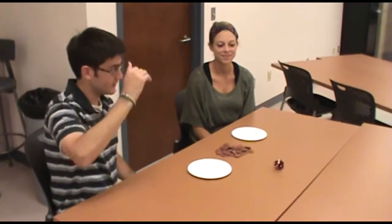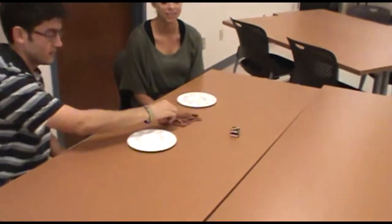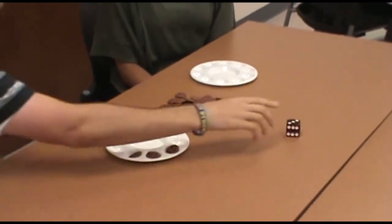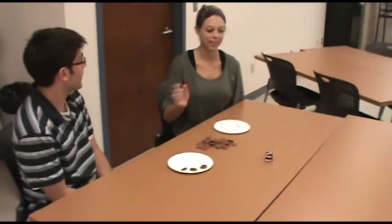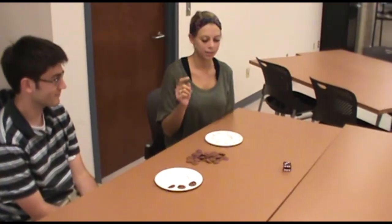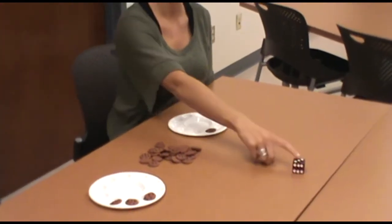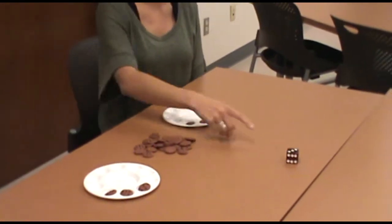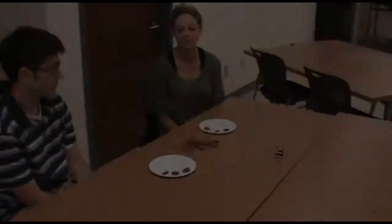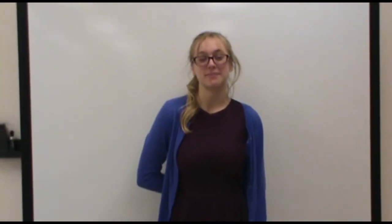Okay, Jamie. Let's try this again. This time I'll show you. Three: one, two, three. Now you try. Three. This is an example of one-to-one correspondence because for each dot on the dice, they took one cookie and one cookie only.